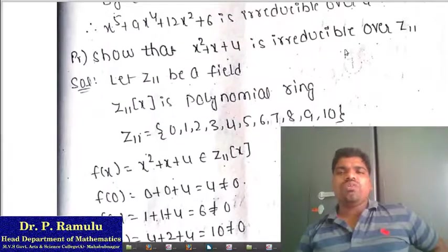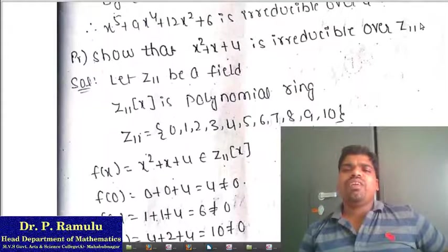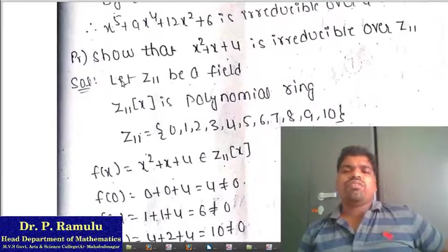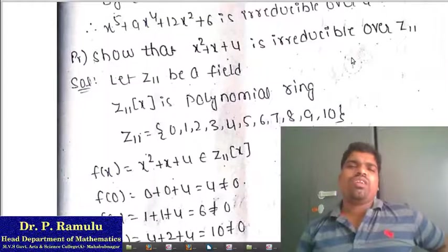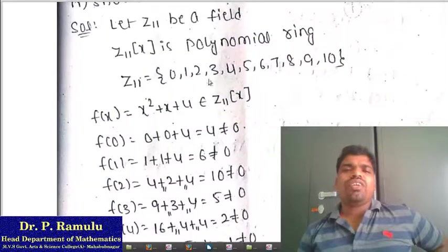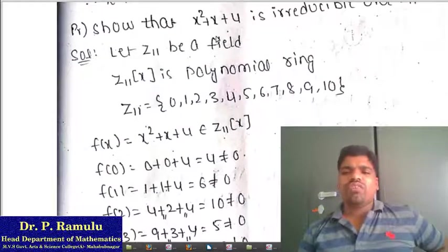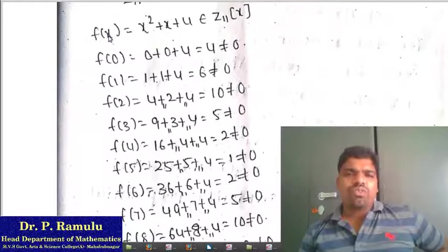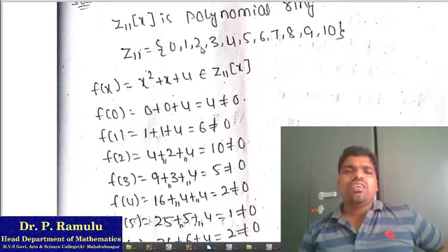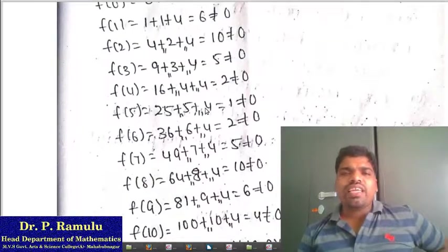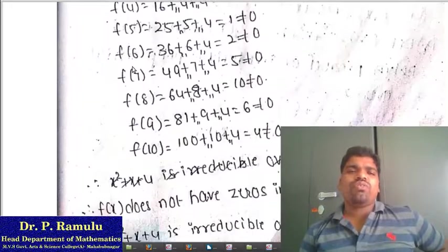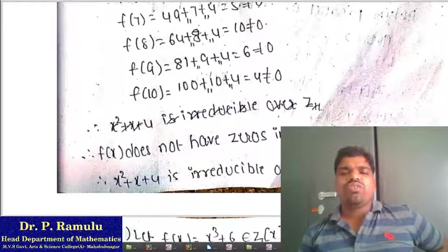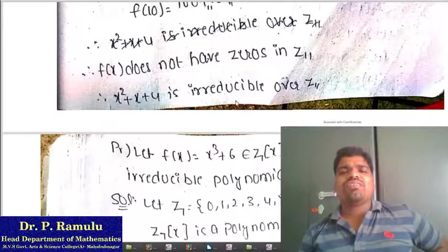Show that x² + x + 4 is irreducible over Z₁₁. For Z₁₁[x], we cannot apply Eisenstein criteria since the field is Z₁₁, not Q. Instead, Z₁₁ contains elements 0 to 10, so substitute all values 0 through 10 into f(x) = x² + x + 4. If we are not getting any zero, then f(x) does not have any zeros in Z₁₁. Therefore x² + x + 4 is irreducible over Z₁₁.